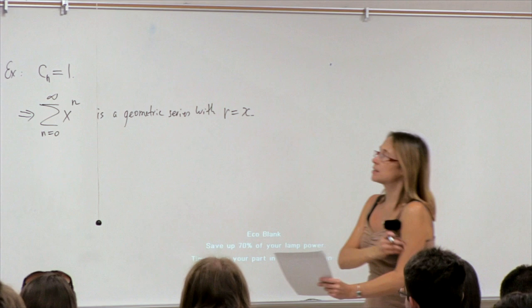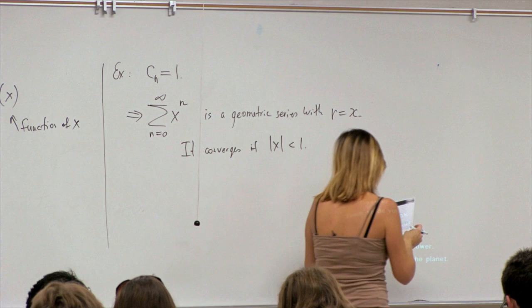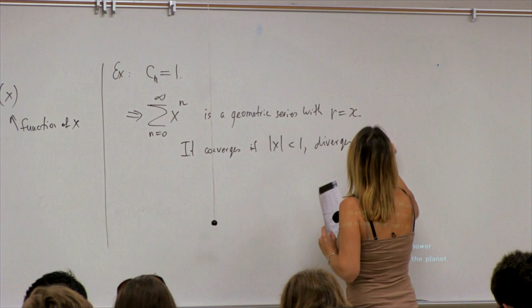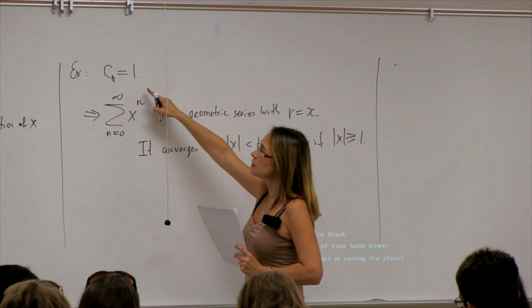We can say when it converges: it converges if the absolute value of x is less than 1, and diverges if the absolute value of x is greater than or equal to 1. But this is only a particular type of power series — the simplest one when all coefficients cn are the same.